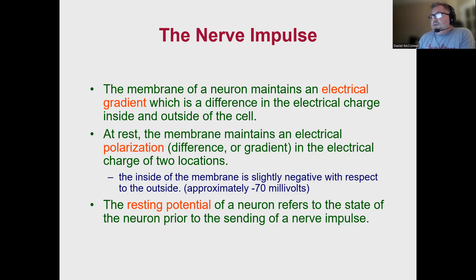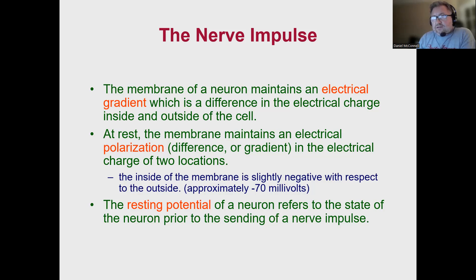In a typical neuron at rest, we have a gradient that results in a slight negative distribution — meaning there are more negatively charged ions on the inside of the neuron compared to the positively charged ions outside. If you added up all the positive and negatively charged ions inside and compared that to the sum outside the cell, you would find a slight differential in the total voltage of 70 millivolts. That differential is negative, so we call this a negative 70 millivolt differential, referring to the idea that voltage is slightly lower inside the neuron compared to outside.